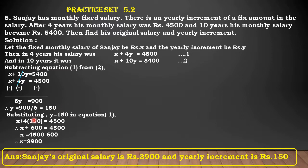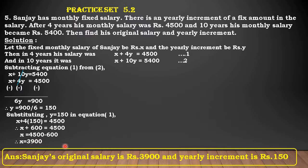Substituting Y equals 150 in equation 1, we get X plus 4 into 150 is equal to 4,500. Therefore, X plus 600 is equal to 4,500. Taking 600 to the other side, we get X is equal to 4,500 minus 600, which equals 3,900. Answer: Sanjay's original salary is Rs. 3,900 and yearly increment is Rs. 150.